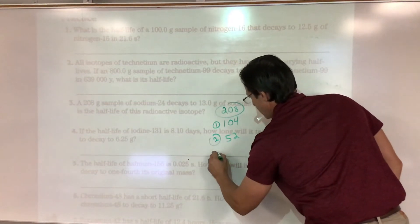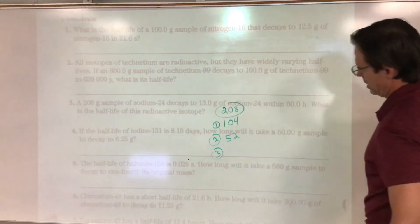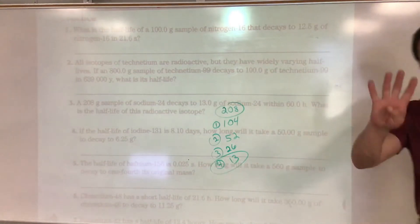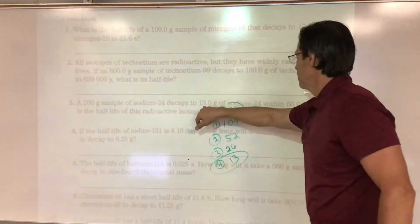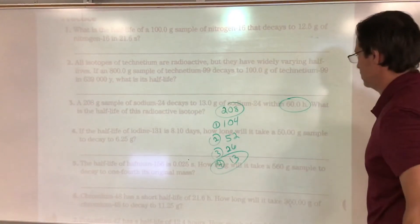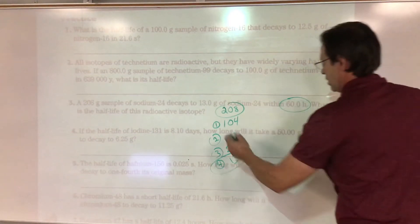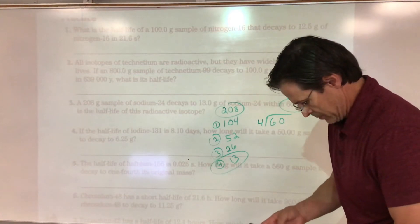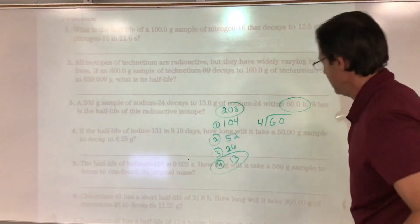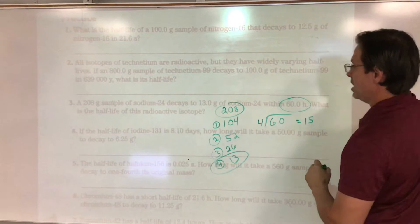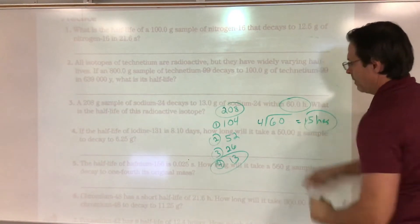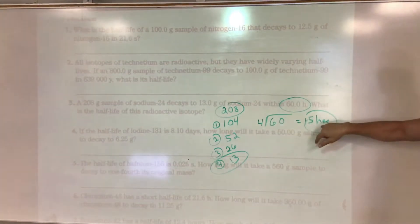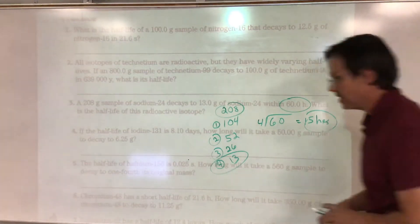Half of 52 is 26, and half of 26 is 13 — so it went through four half-lives. That took 60 hours total. Four into 60: 60 divided by 4 equals 15. So the half-life is 15 hours. Each step was 15 hours, and 15 times 4 equals 60.